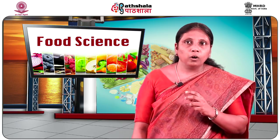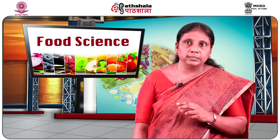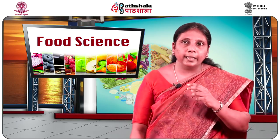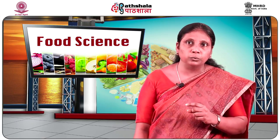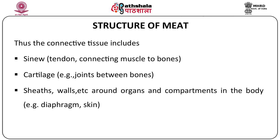Connective tissue in meat forms the walls of the muscle fibers, surrounding the individual muscle fibers held together as muscle bundles. There are three types of connective tissues in the structure of meat. One is the sinew, found in the tendon which connects the muscle to the bones, and also in cartilage, which are the joints between the bones. Connective tissue also occurs as sheets or walls around organs and compartments in the body, such as the diaphragm and the skin.